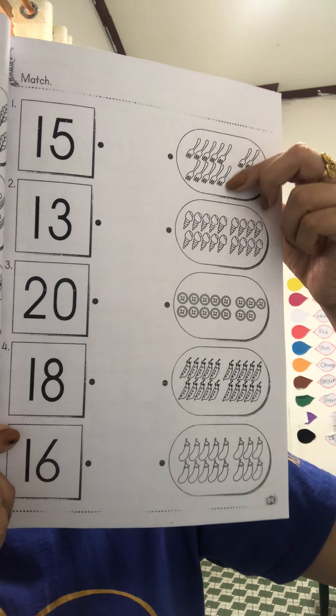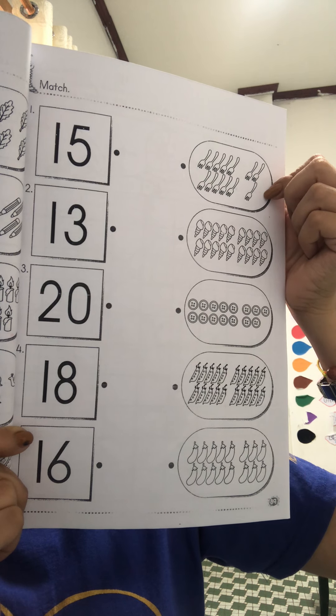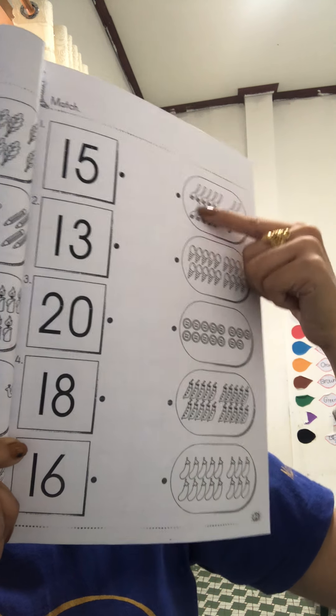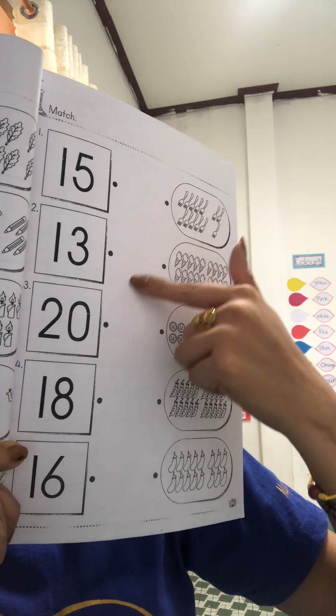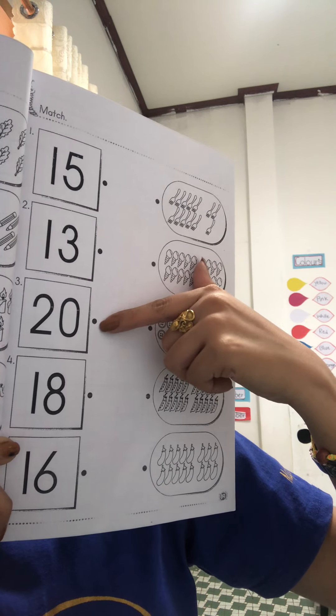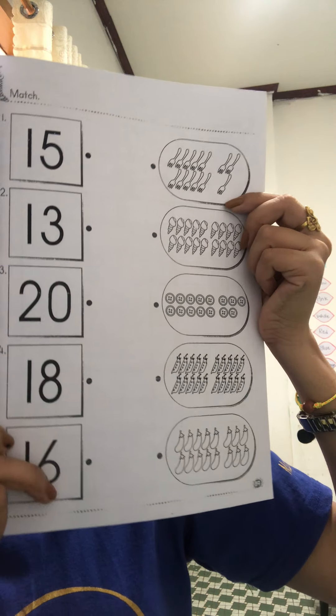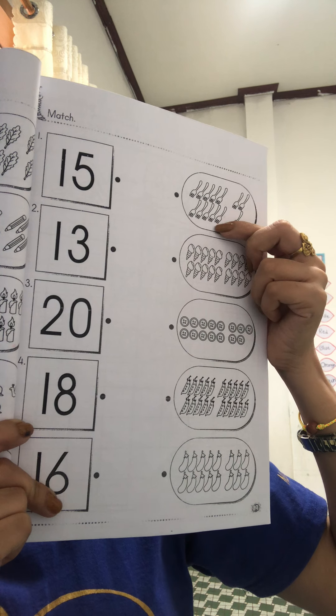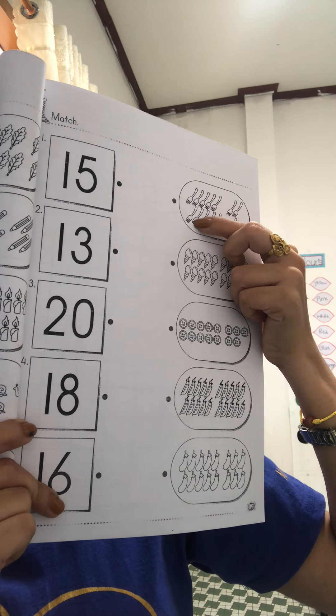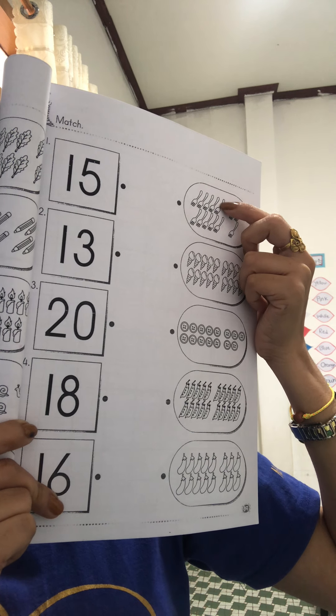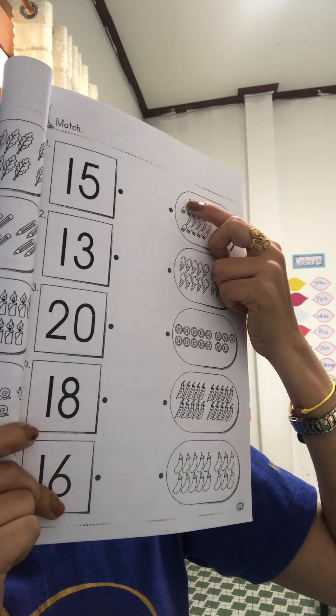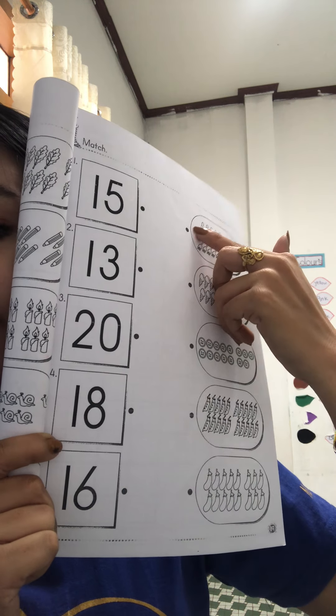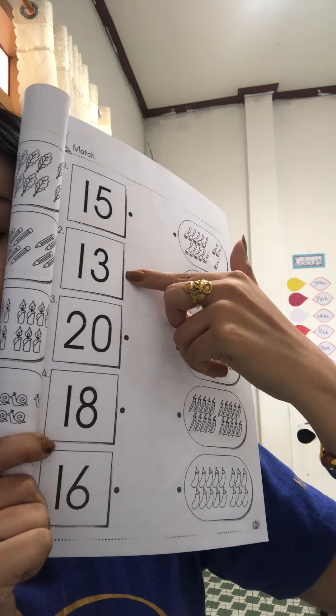Okay, the first one you have to count the pictures in the box. Okay, one, two, three, four, five, six, seven, eight, nine, ten, eleven, twelve, thirteen. Okay, what is number 13? Can you show me? Okay, this is number 13, yeah.